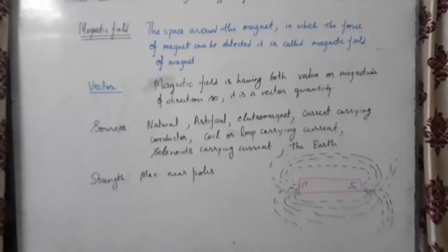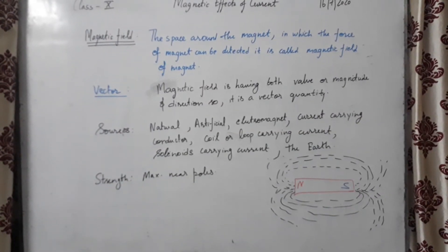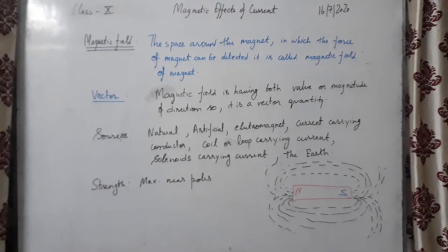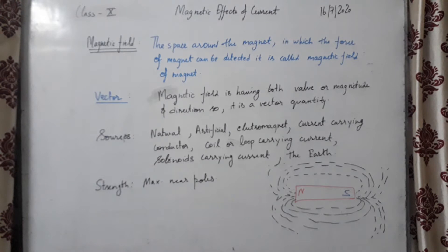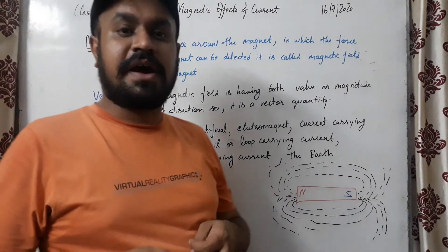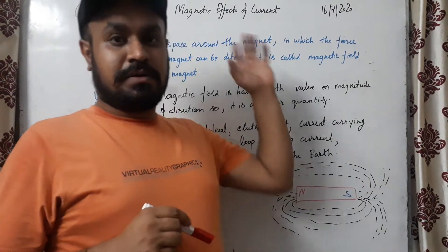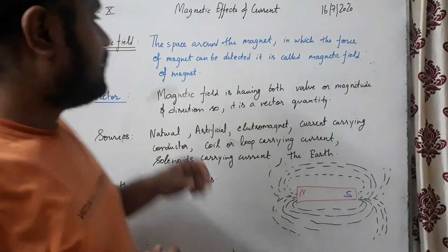Good evening dear students. Today we will be starting with Class 10th Magnetic Effect of Current. Magnetic effect of current is the magnetic effect produced by electric current. Before elaborating on that topic, we will be discussing something involved in this chapter — the topic is magnetic field. I am Rupindal Singh, explaining the chapter Magnetic Effect of Current.